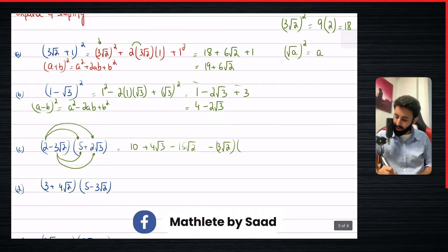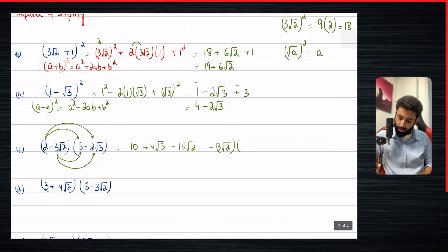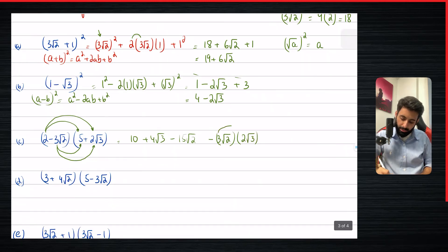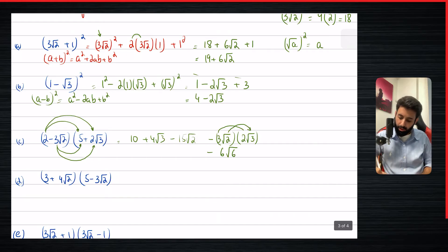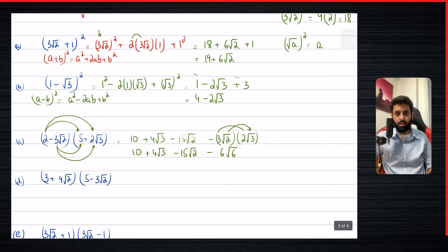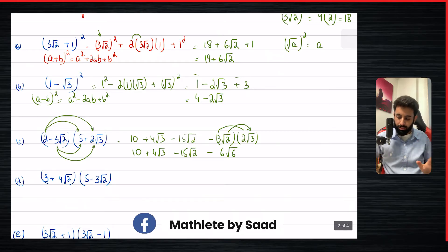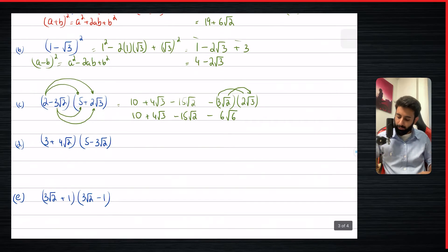3√2 multiplied by 2√3: three gets multiplied by two giving six, and √2 gets multiplied by √3 giving √6. So that term is 6√6. Writing everything together: 10 + 4√3 - 15√2 + 6√6. We cannot simplify this further, so this is our final answer.